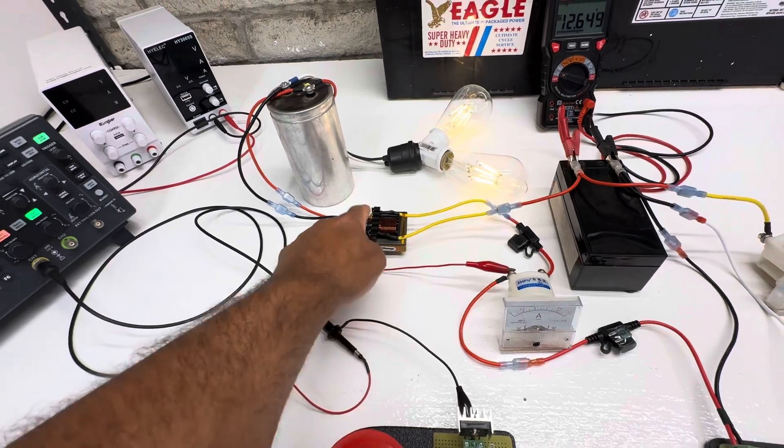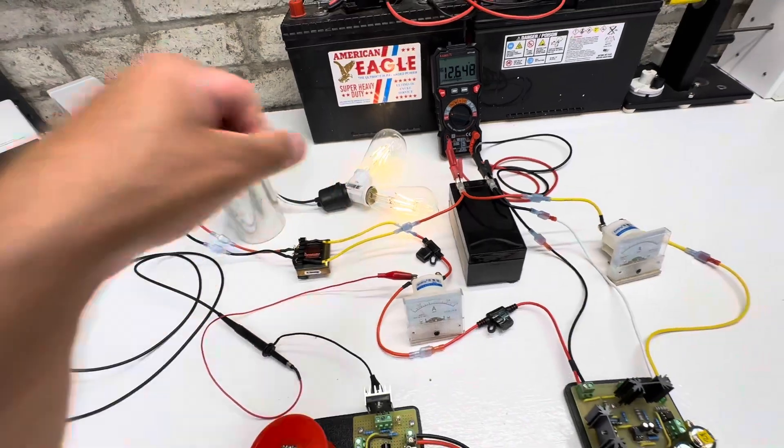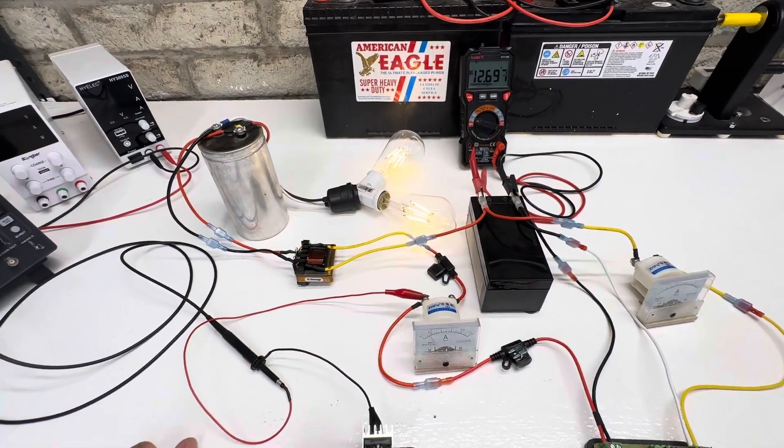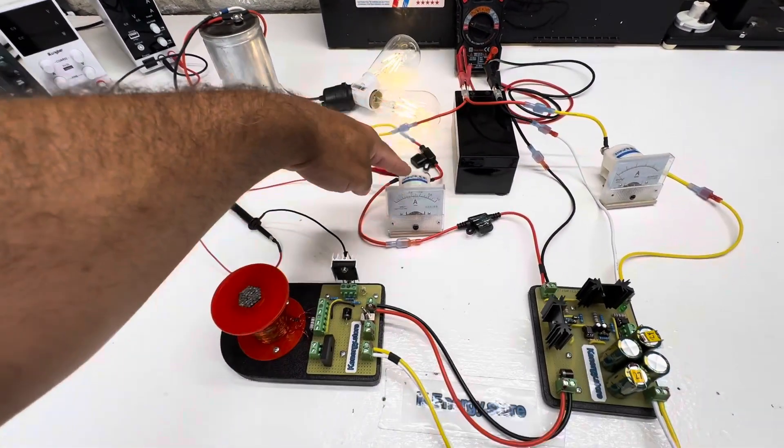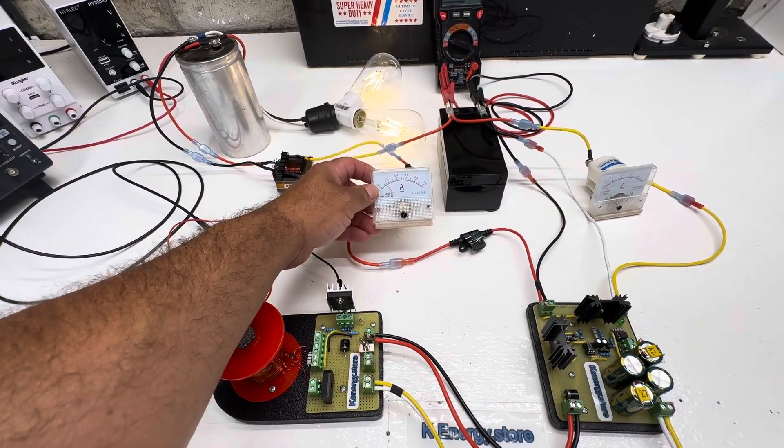The output of the transformer goes into this capacitor and then runs these lights. These are 12 volt, 6 watt LED lights. Continuing down the line, it goes through the amp meter. We're using about 150 milliamps.